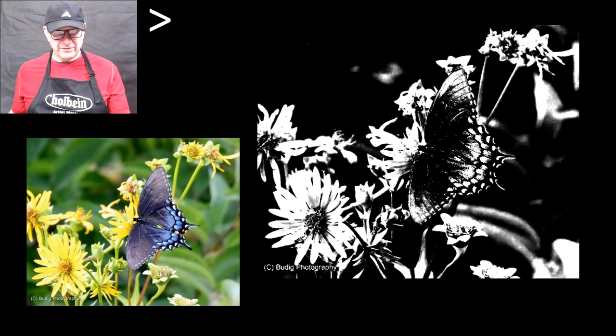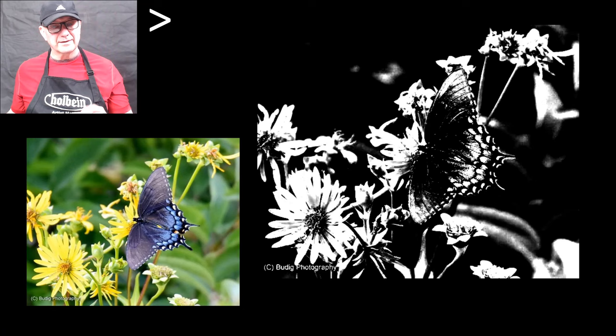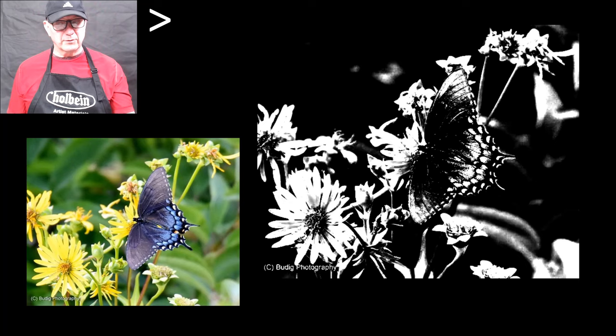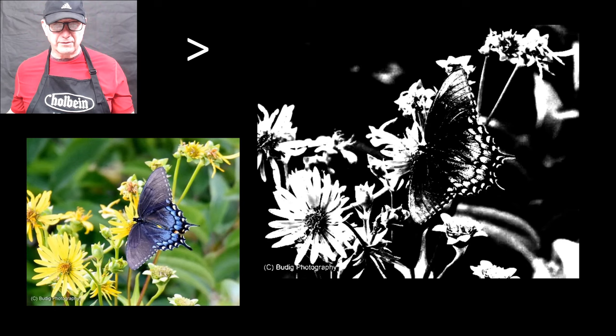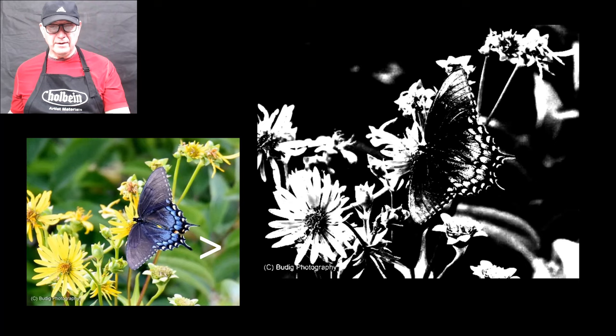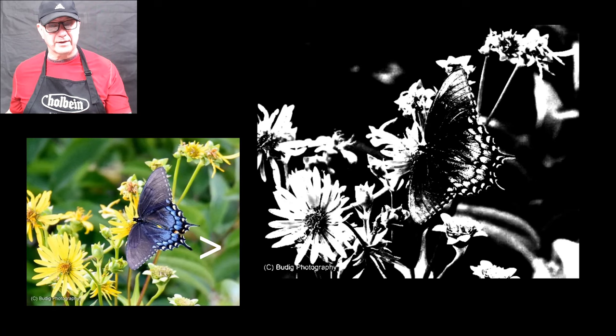Let's start with this first photograph — it's a butterfly. A lot of times when you're looking at a photograph you're looking at the color and it makes it beautiful. But when it comes to designing the painting from this photograph, we want to look at the black and white. I always posterize it down to black and white, and what I'm doing is assigning my middle tone colors to either black or white.